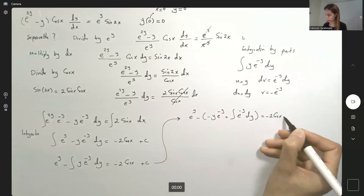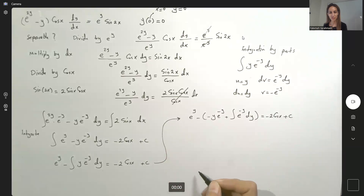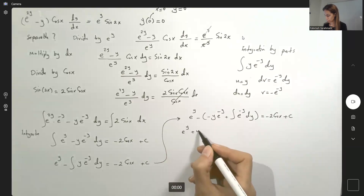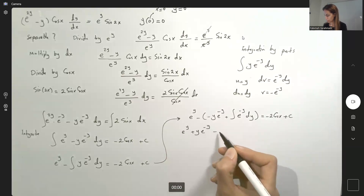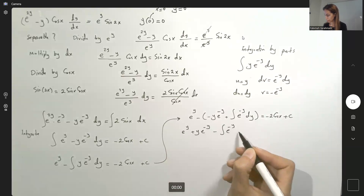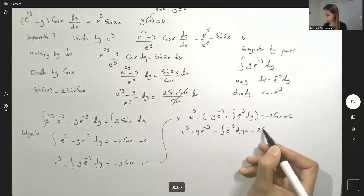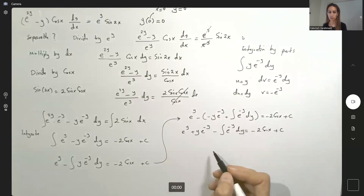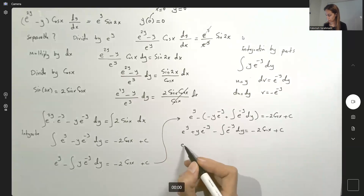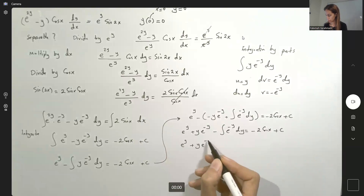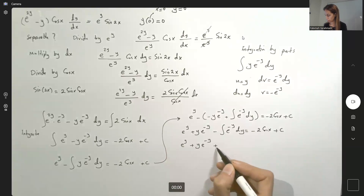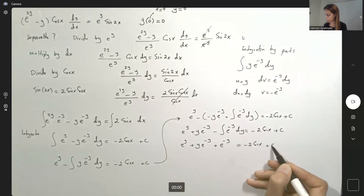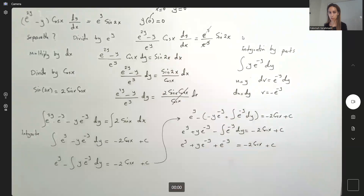So you have e to the power y, plus e to the power y times e to the power negative y, plus y e to the power negative y, minus the integral of e to the power negative y dy, equals negative 2 cosine x plus C. That integral is easy: you get e to the power y plus y e to the power negative y plus e to the power negative y equals negative 2 cosine x plus C.